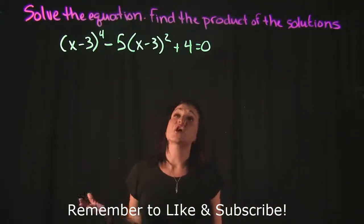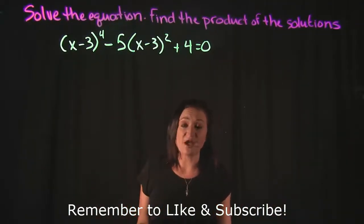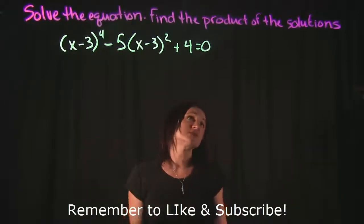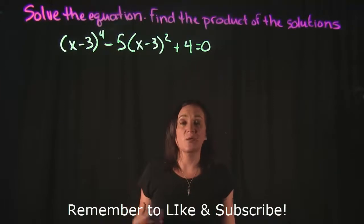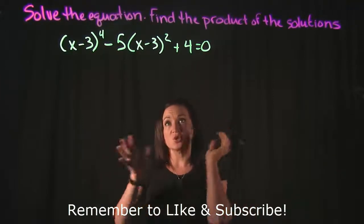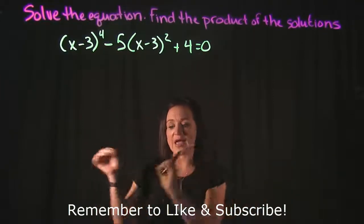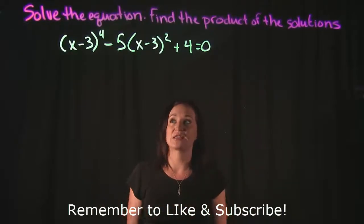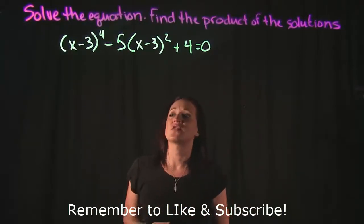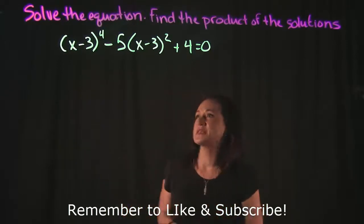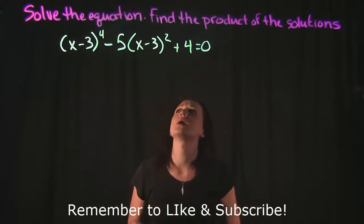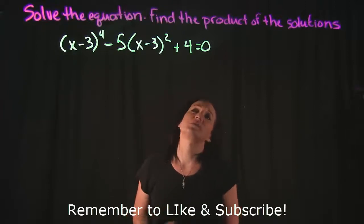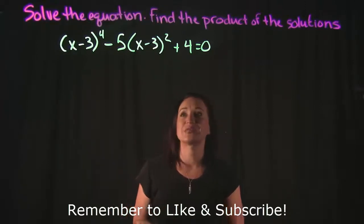For the following problem, we're going to solve the equation and then find the product of the solutions that we get. This implies we're going to get more than one solution, so we'll multiply our answers in the end to get a final answer. The equation is: x minus 3 raised to the fourth power, minus 5 times x minus 3 raised to the second power, plus 4 equals 0.